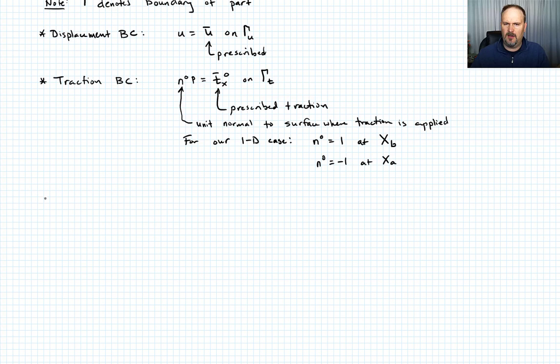For our problem in particular, the first boundary condition is u(xa, t) = 0 for all time. It's fixed at that left-hand boundary.